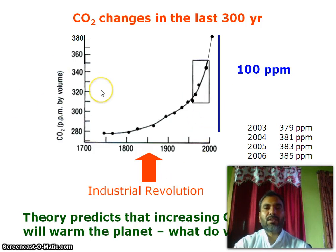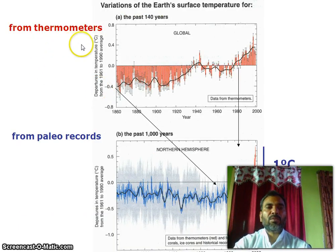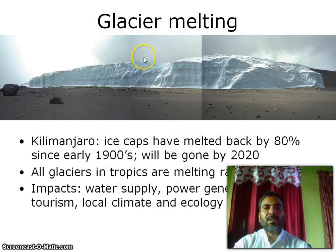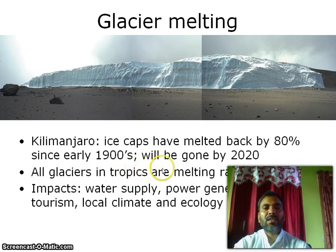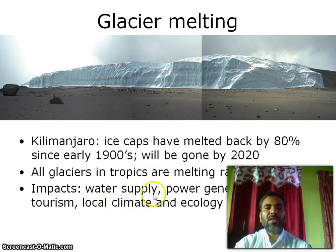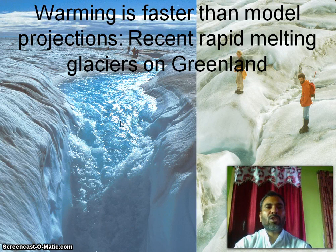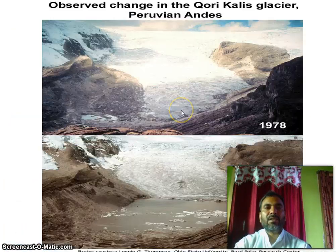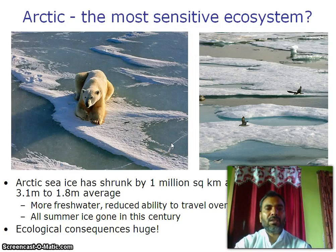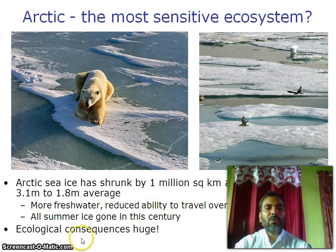Since the Industrial Revolution, CO2 measured from thermometers and video records shows glacier melting: ice caps have melted back by 80% since the early 1990s and may be gone by 2020. All glaciers in the tropics are melting rapidly, impacting water supply, power generation, tourism, and local climates and ecology. Warming is faster than model projections, with recent rapid melting of glaciers on Greenland. Antarctic sea ice has shrunk by 1 million square kilometers.